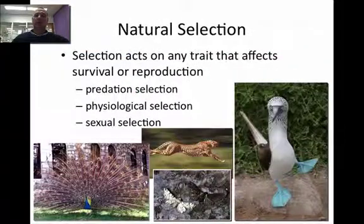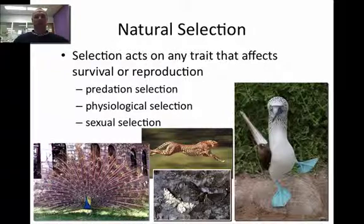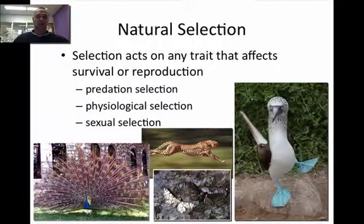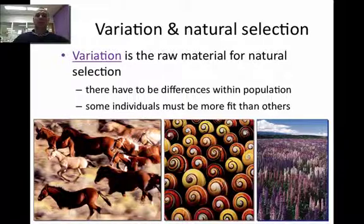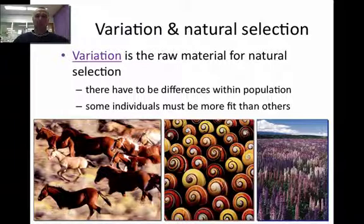When we talk about natural selection, there is a selection axis — any traits that affect survival, such as predation, physiology, sexual selection, et cetera. Variation is the raw material of natural selection; without it, evolution will not occur. We've got to have variation or a break in equilibrium for evolution to even start.